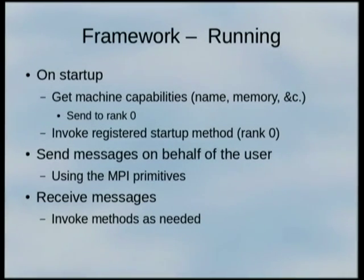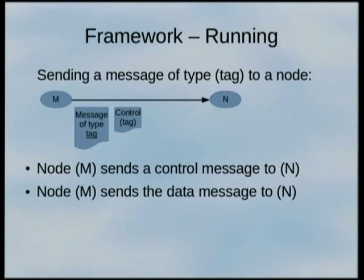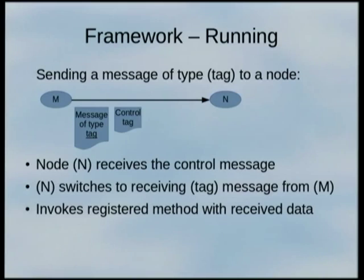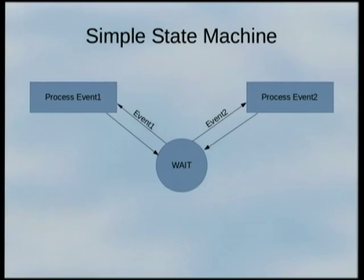The framework I've written, when it starts up, gets information about this node — its capabilities, name, number of cores, memory — and sends all that to the control node to determine how to break up the problem. A little tweak adds flexibility: a control tag. A node sending a message of type tag to another node first sends a control message, then the data. That control message tells the receiver to switch over to receive that tag type from that specific node. On the receiving side, you get the control tag, switch to receiving from that sender, and get the data. That's the key — it allows any message to any node at any time without prior coordination, because everything is in a wait state waiting for events.